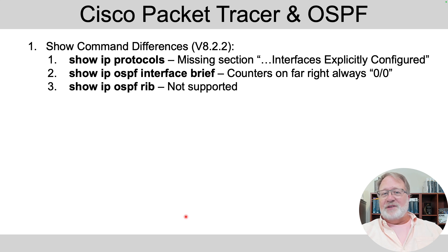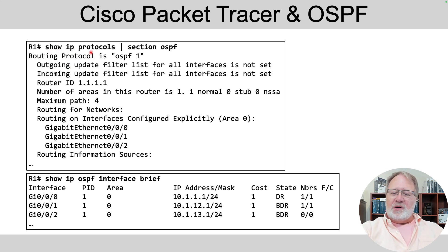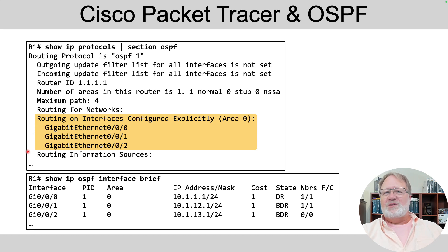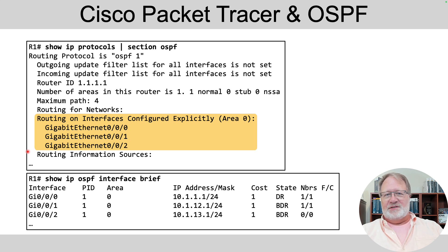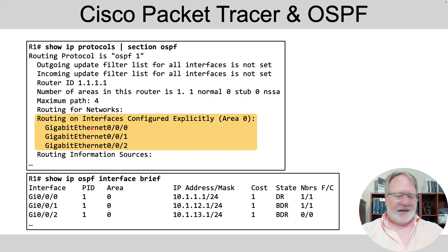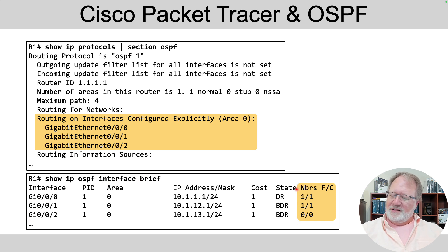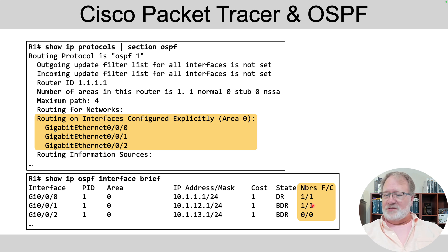There are a few issues with Packet Tracer for OSPF verification. First, in show IP protocols, a highlighted section appears when you configure OSPF using interface subcommands as an alternative to the network command — you can configure that in Packet Tracer, but that section of output does not appear. Second, the show IP OSPF interface brief command should list a number of neighbors per interface that are not zeros, but in Packet Tracer they're all zeros — it does not list the correct number of neighbors.